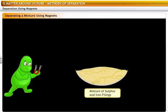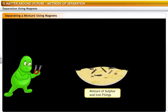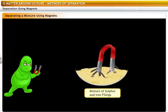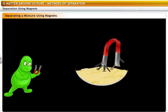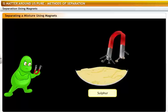You can separate a mixture of sulfur and iron filings by passing a magnet over it. The iron filings will get attracted to the magnet and will stick to it. You can use this method to separate a mixture in which one of the components is a magnetic material.